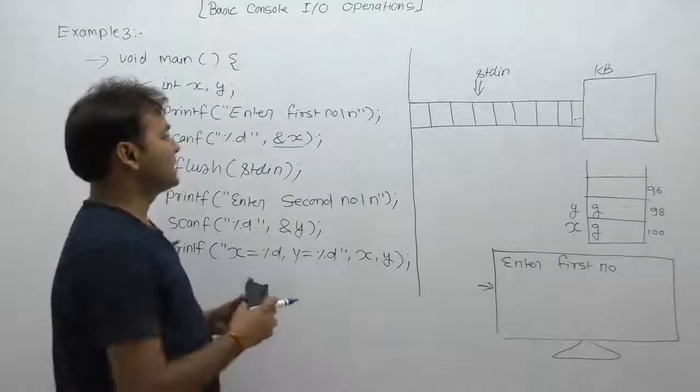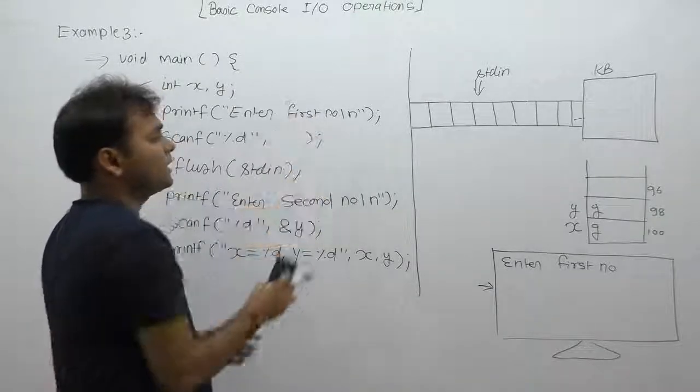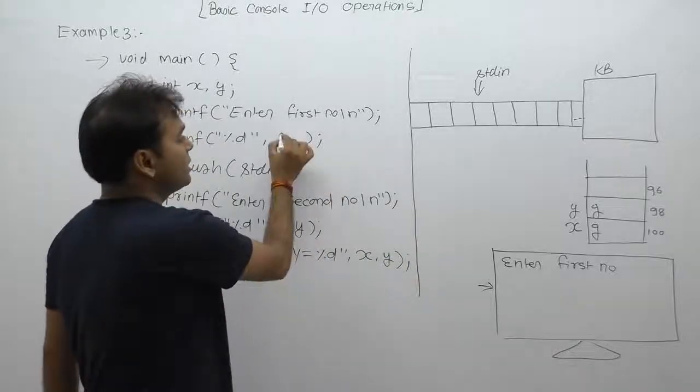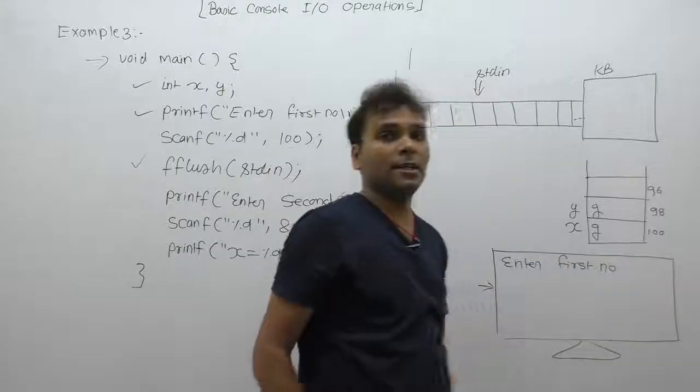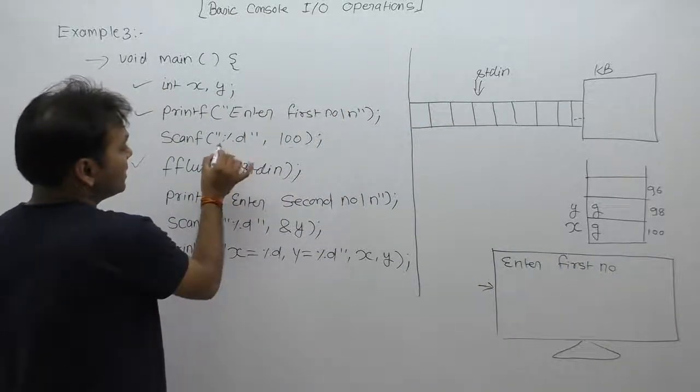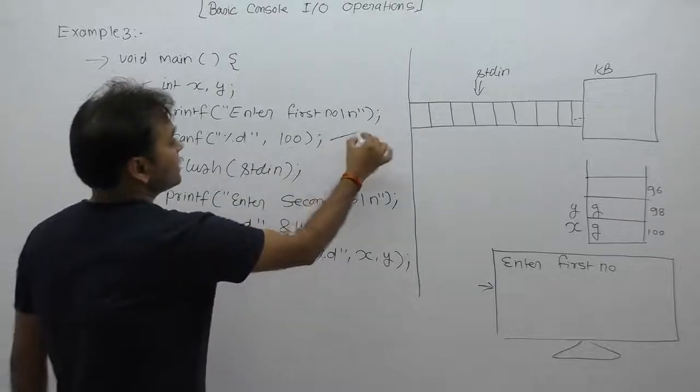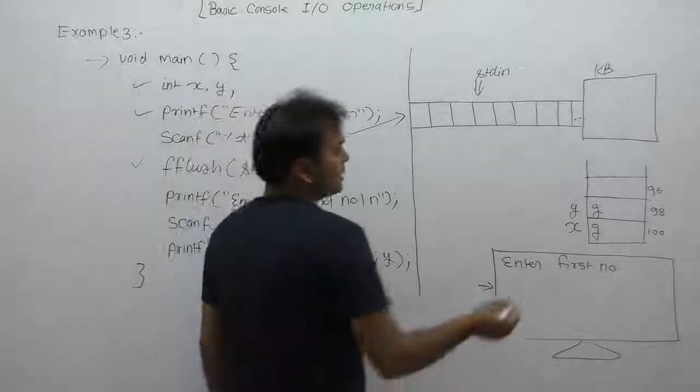Next one, scanf function. Scanf function takes address of x as a parameter, the memory address of x we are considering as 100. Next, currently scanf function will work by reading contents from standard input buffer stdin. Currently, buffer was empty.